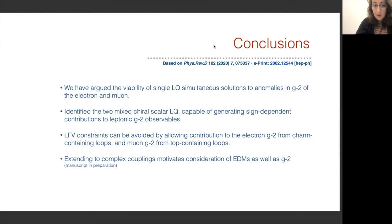Here we've argued the viability of the single leptoquark solution for simultaneously solving the anomalies in the g-2 of the electron and muon. We've identified the two mixed chiral leptoquarks capable of generating sign-dependent contributions to these g-2s and we've shown that the lepton flavor violating constraints such as mu-2-e-gamma can be avoided by looking at an uptype quark basis and decoupling the electron and muon sectors by coupling electrons to charms to generate the g-2 of the electron and muons to tops for contributing the g-2 of the muon. We could extend this work to complex couplings to motivate consideration of EDMs as well as the g-2s and this is work that I am currently undertaking. I'll draw your attention again to the e-print mentioned here which was published in PRD in 2020 and thank you for coming to my talk and I hope I'll see you at the panel session.